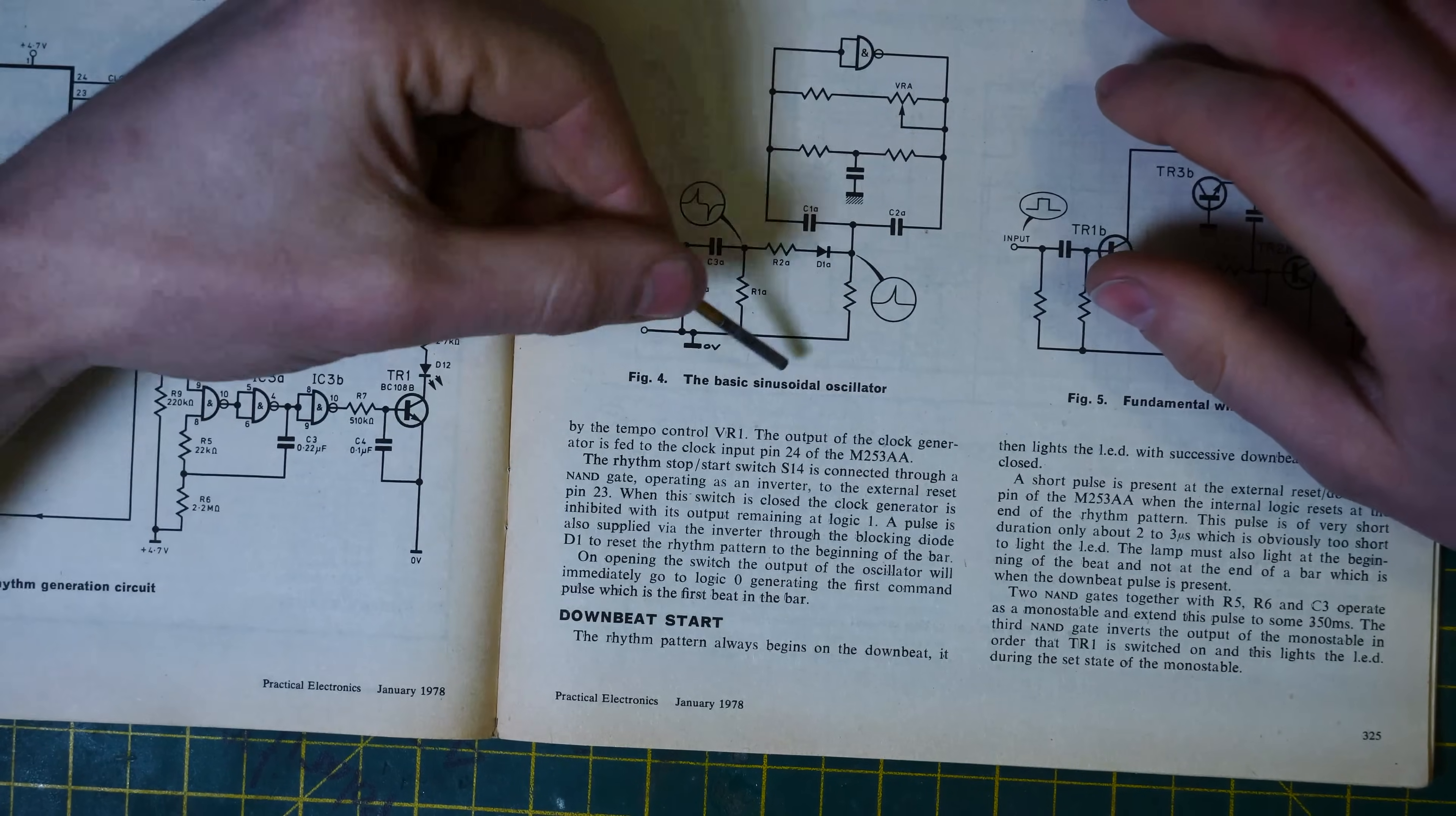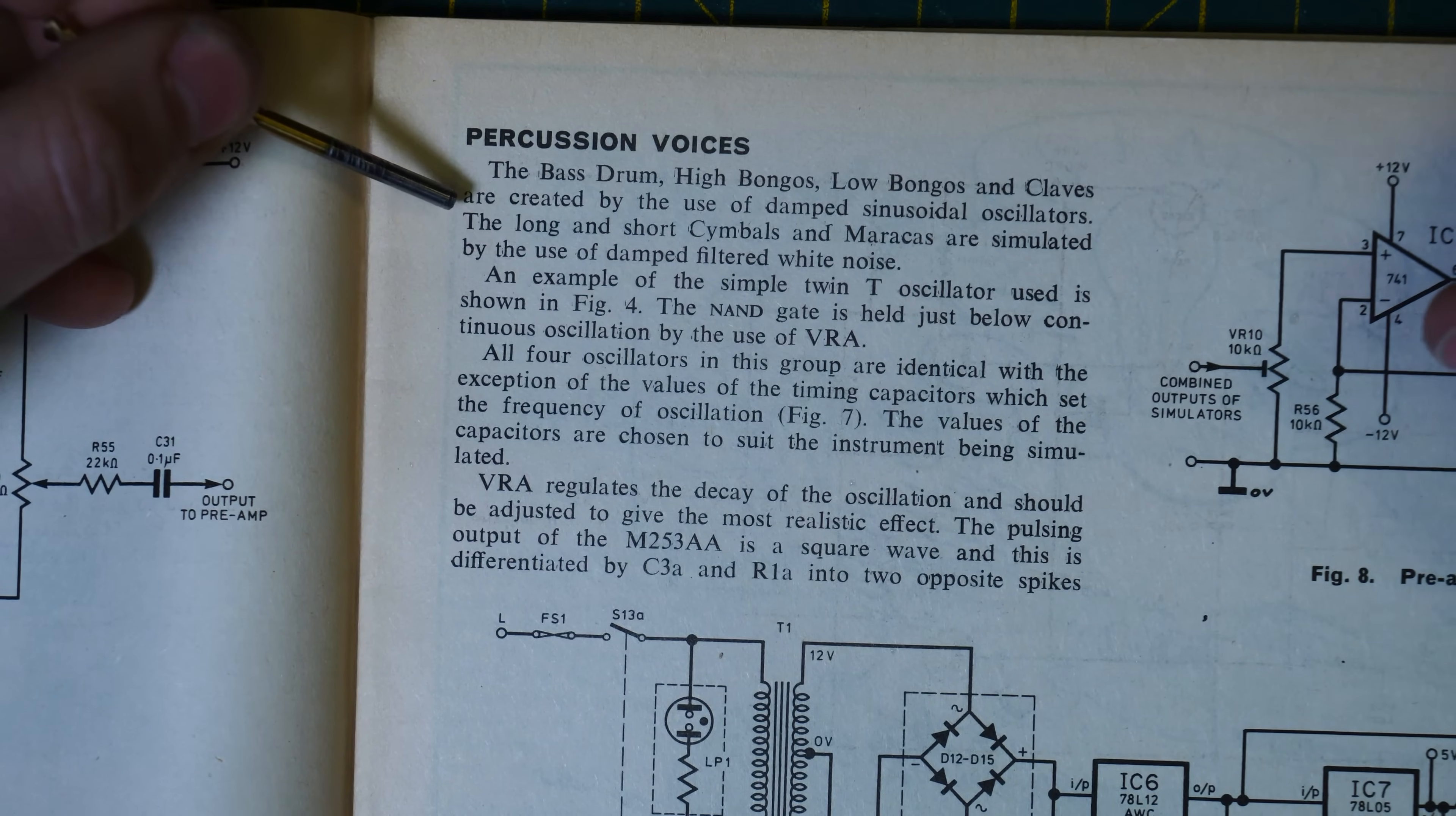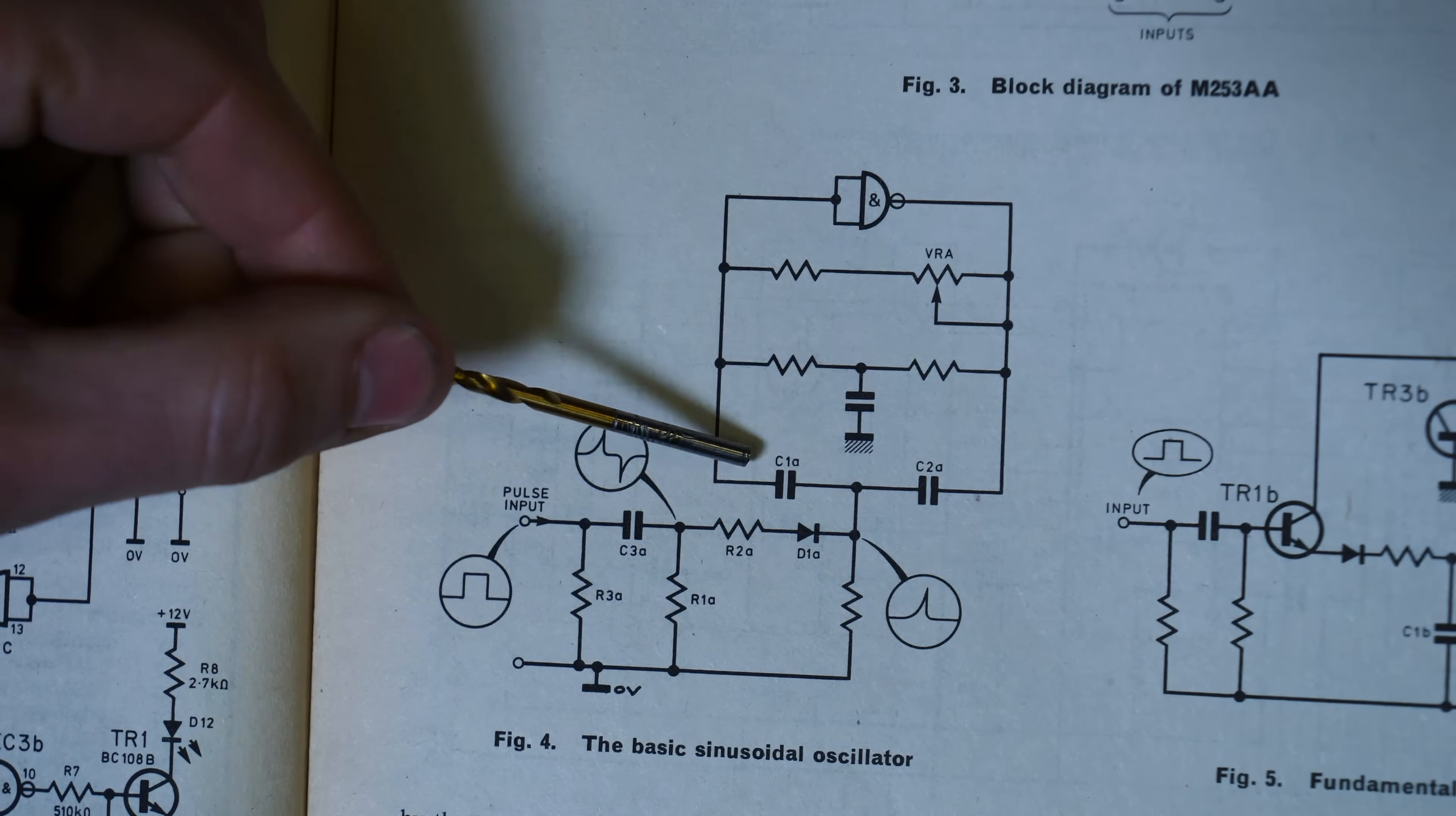So this is where we get into the meat of the machine. So this figure, figure four, is the sinusoidal oscillator. This is the circuit for the percussion voice. The bass drum, high bongos, low bongos and clave are created by the use of damped sinusoidal oscillators. The long and short symbols and maracas are simulated by the use of damped filtered white noise, like mentioned. An example of the simple twin T oscillator used is shown in figure four. The land gate is held just below the continuous oscillation by the use of VRA.